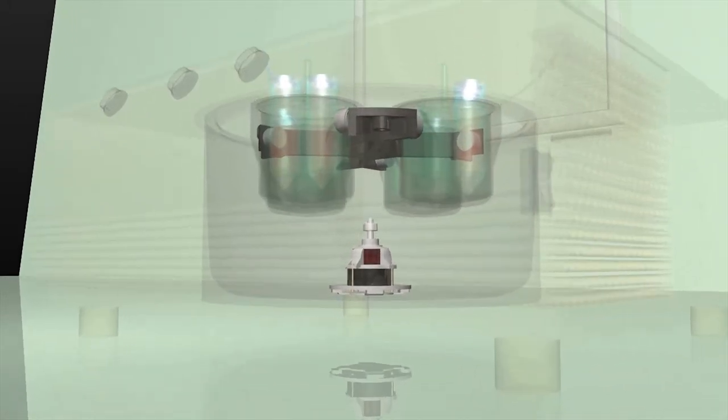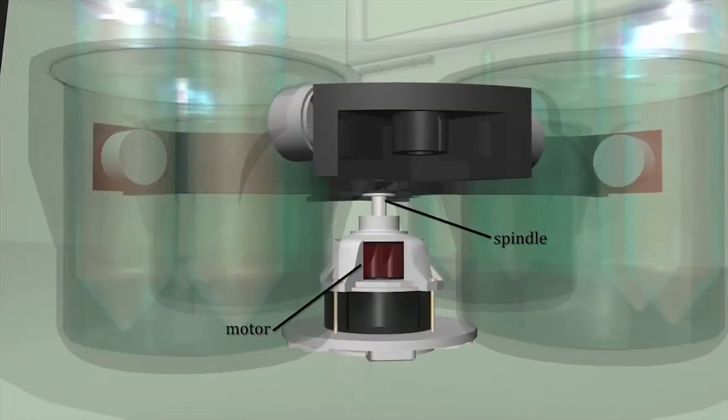The rotor is firmly attached to the drive spindle so that as the motor turns, the rotor will rotate at the same speed. The faster the rotor spins, the higher the g-force placed on the particles in their tubes or bottles.